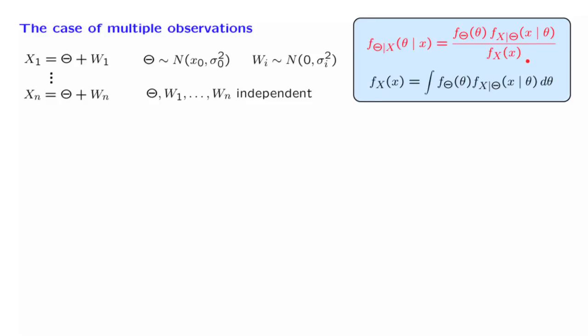The only remark that needs to be made is that in this case there are multiple x's. So x up here stands for the vector of the observations that we have obtained. And similarly, little x will stand for the vector of the values of these observations.